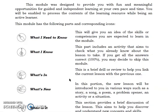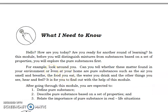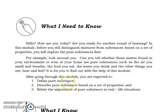Let's begin with the What I Need to Know section. Hello. How are you today? Are you ready for another round of learning? In this module, before you will distinguish mixtures from substances based on a set of properties, you will explore the pure substances first. For example, look around you. Can you tell whether this matter found in your environment or even at your home are pure substances? Such as the air you smell and breathe, the food you eat, the water you drink, and the other things you see, hear, and feel. After going through this module, you are expected to: number one, define pure substance; number two, describe pure substance based on a set of properties; and number three, relate the importance of pure substance in real life situations.